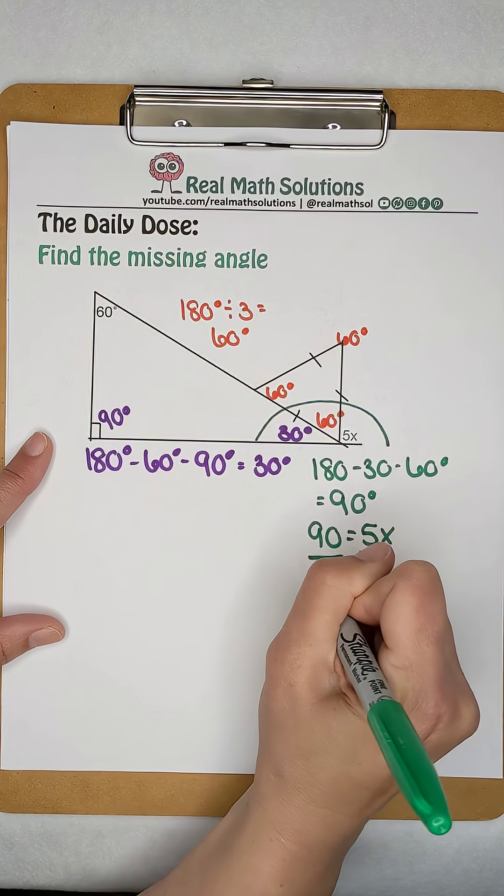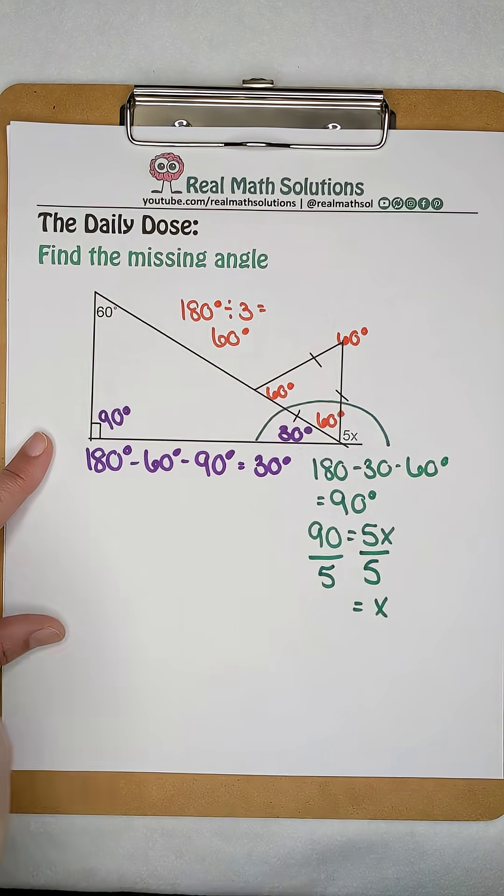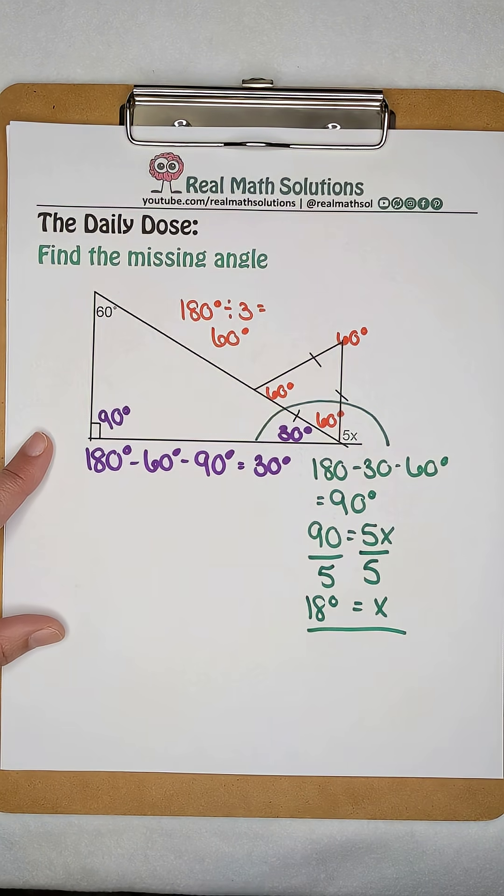So now to find what x is worth, I can divide both sides by 5. When I do 90 divided by 5, that tells me that x is worth 18 degrees.